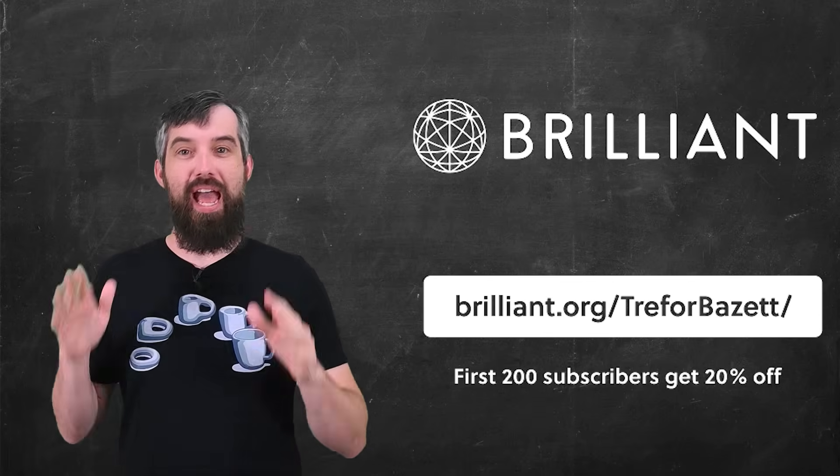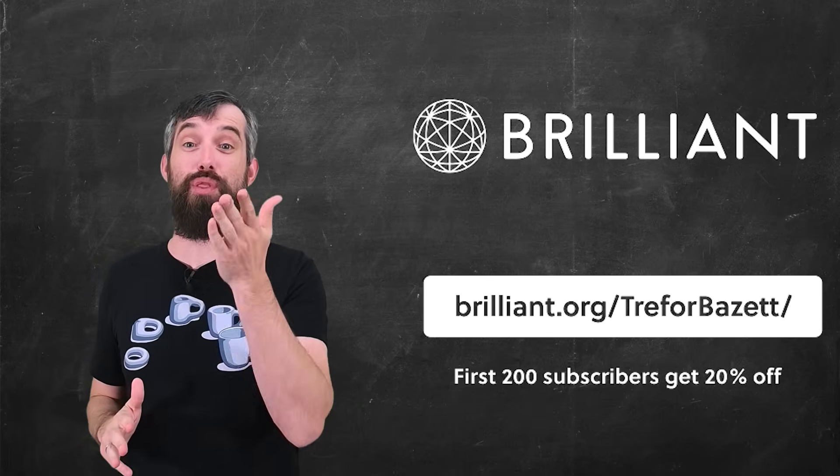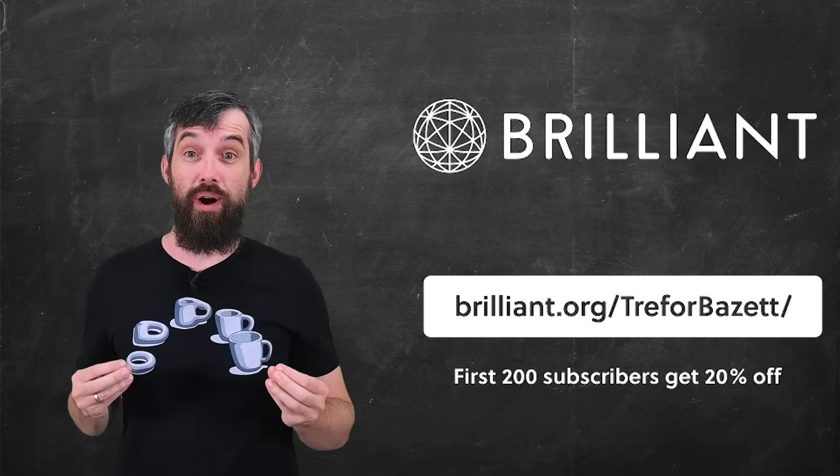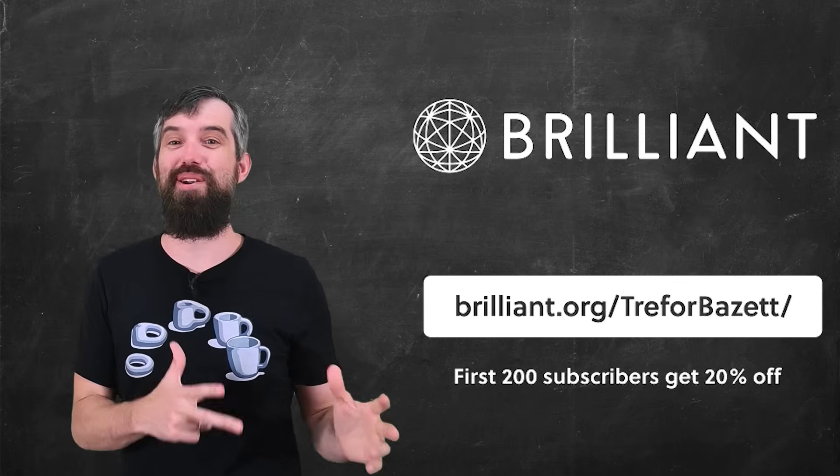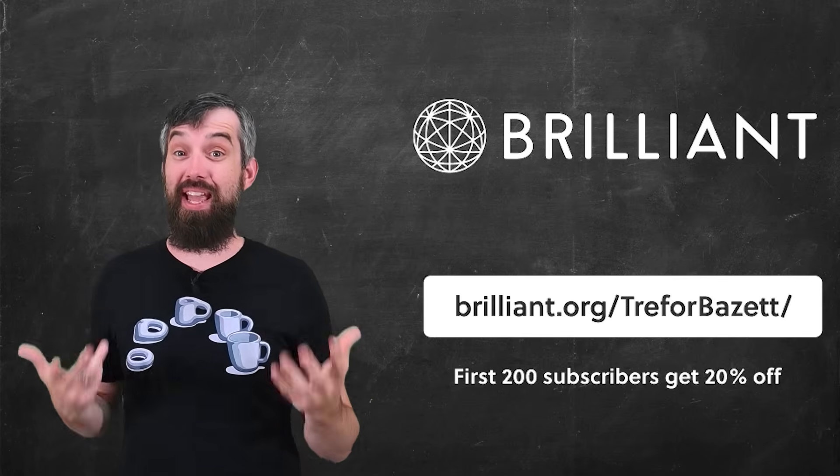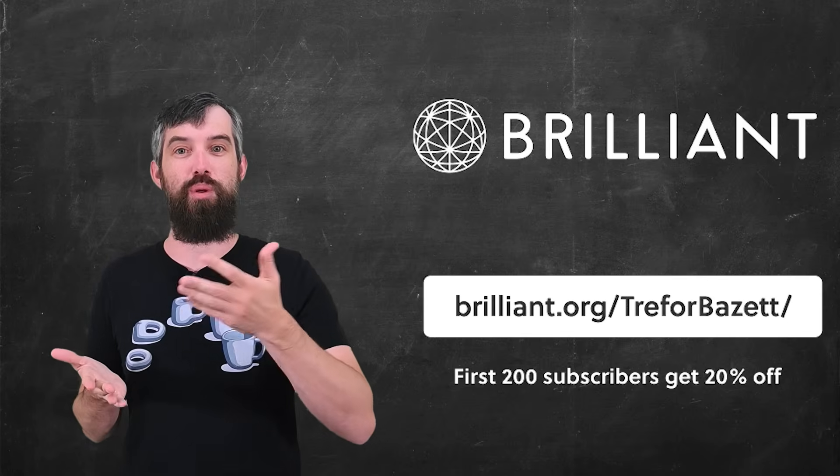To try everything that Brilliant has for free for a full 30 days, go to brilliant.org slash Trevor Bazit or click the link down in the description, and the first 200 of you to click that link are going to get an additional 20% off an annual premium subscription.